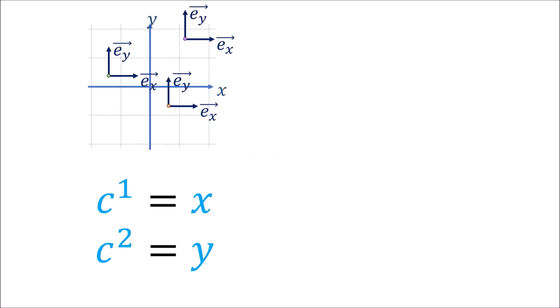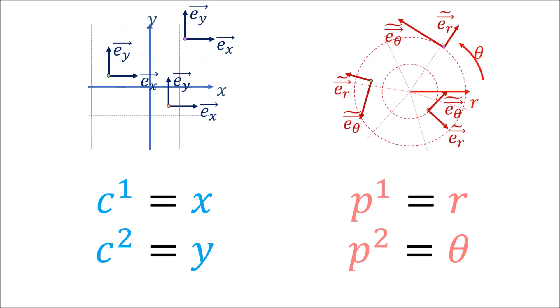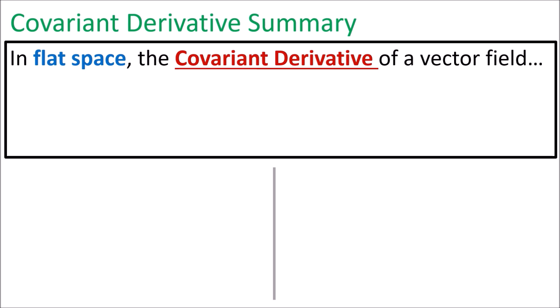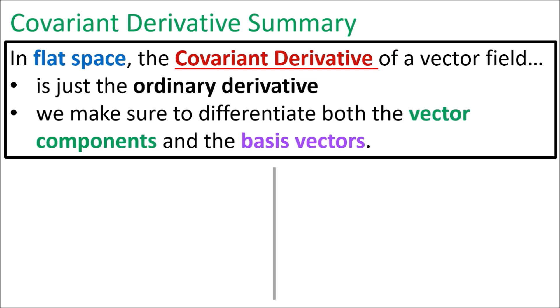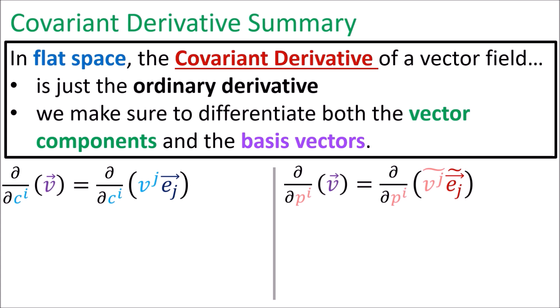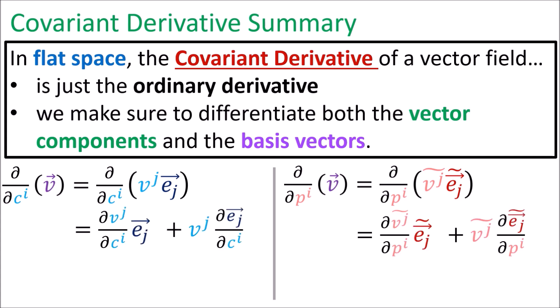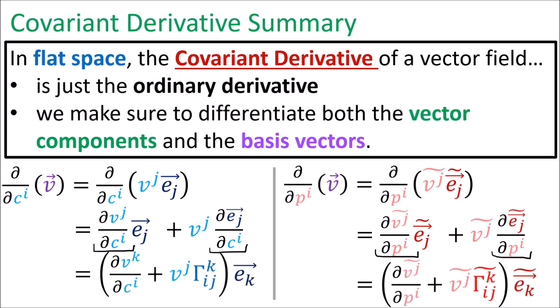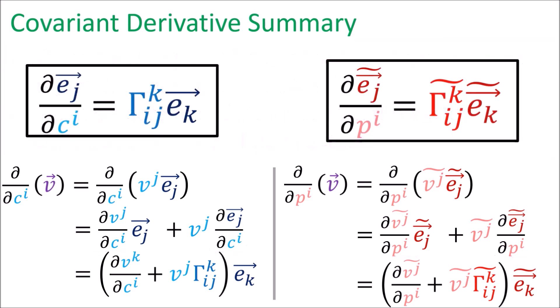Just as a reminder, the Cartesian variables x and y are going to be written as c1 and c2, and the polar variables r and theta will be written as p1 and p2. So in video 17, I introduced the covariant derivative in flat space, which is just the ordinary derivative. When we take the covariant derivative of a vector field, we use product rule to differentiate both the vector components and the basis vectors. And this expression is often written using the Christoffel symbols, which are defined like this.